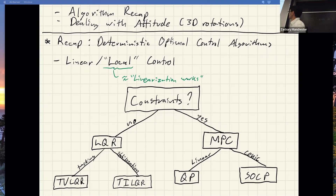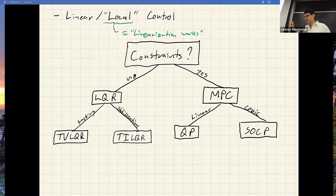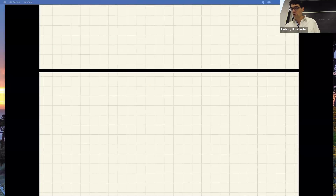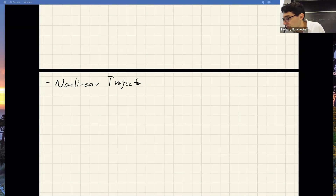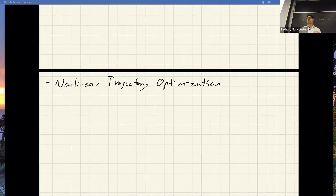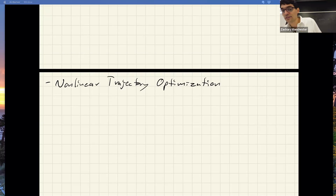We've done all of these things so far. This is the decision-making tree of what your problem looks like — this is linear/convex land. Stay in this world if you can; it's the better place to live. The next set of things we talked about were nonlinear trajectory optimization. This is where you really can't ignore the nonlinear dynamics — typically when you need to plan a motion from scratch, not doing reference tracking. This is often the offline planning problem, though you can also run these things online as replanning.